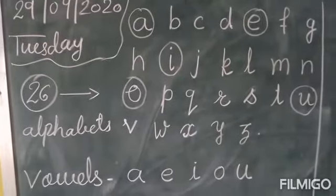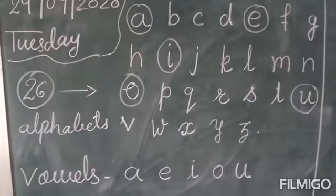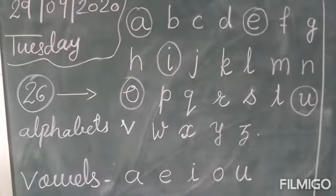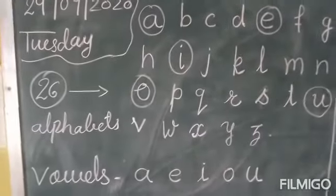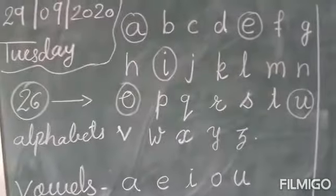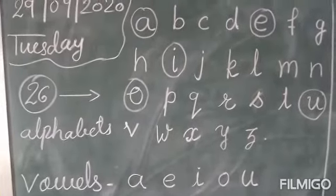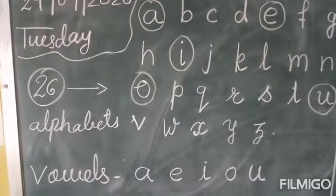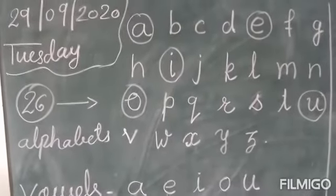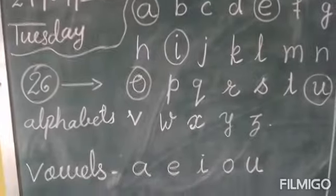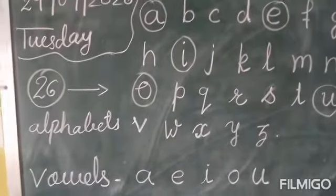So students, as you can see, there are 26 alphabets in our English family. There are some special letters also, like A, which I have circled already, E, I, O, U. These are the special letters of our English family.